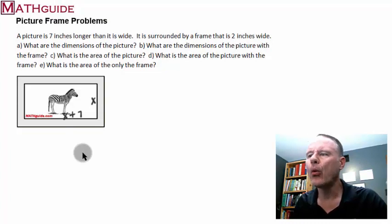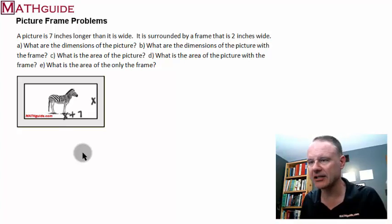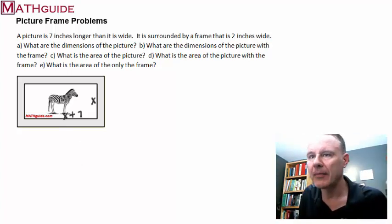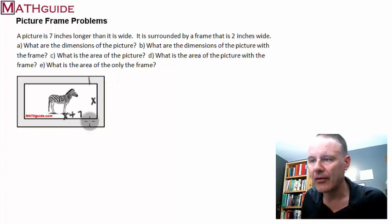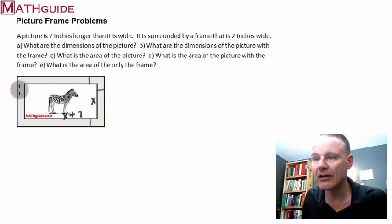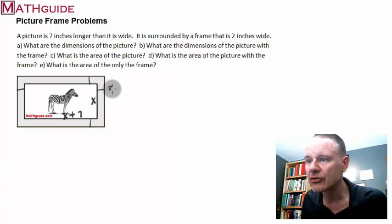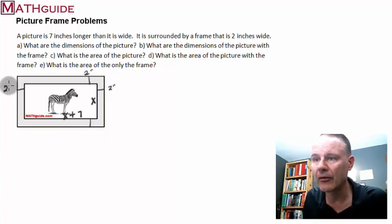Part B asks, what are the dimensions of the picture with the frame? Now this gets a little bit tricky. I know that this distance right here, that is two inches. I know that this distance right here is two inches. It's two inches all the way around. So I know that this distance right here is two inches. This distance right here is two inches. Two inches for all of these guys. So maybe I'll put that all the way around, two inches.